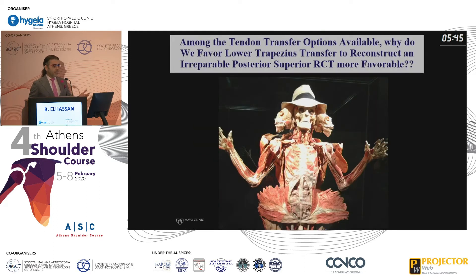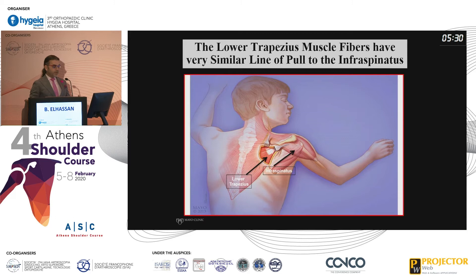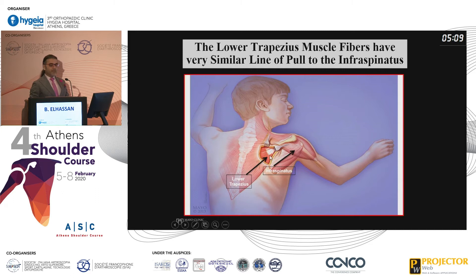So why do we like it? The vector is very important. The scapula is on the posterior chest, and every rotator cuff has the same vector — supra is here, infra is here, subscap is here. They're all the same vector. This is why when you talk about trapezius for subscap, it's the same vector. If you take latissimus, which is an internal rotator, it's very hard to train because you need to do the Gerber maneuver. If you take a muscle that has the same vector, it's always better.